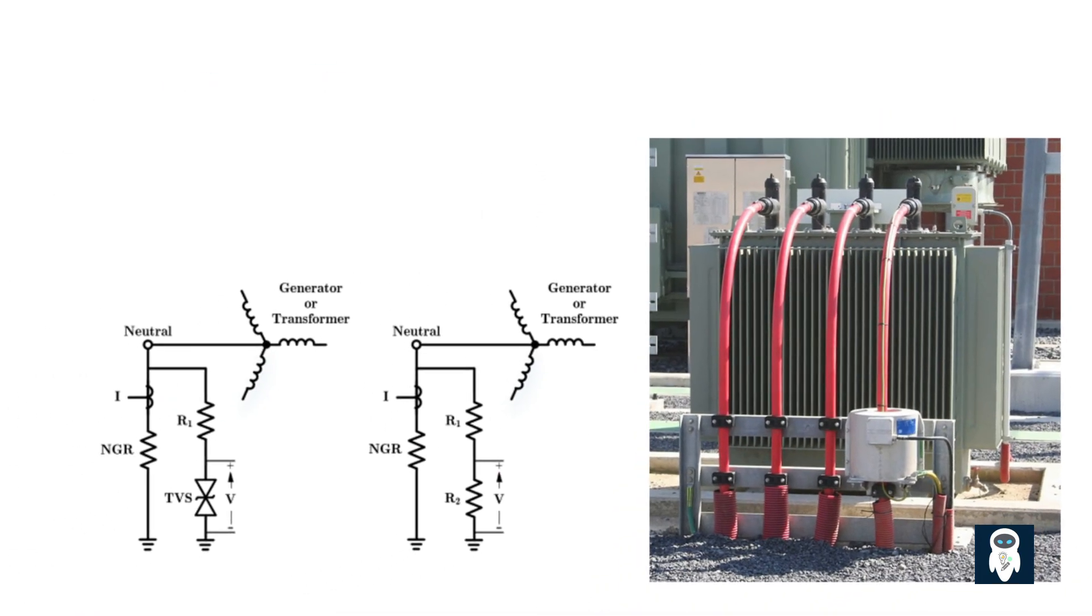Now, let's talk about the neutral grounding resistor. In simple terms, a neutral grounding resistor is a resistor that connects the neutral point of a transformer to the ground. It plays a significant role in ensuring the safe and reliable operation of the power system. So, what is the main reason for using a neutral grounding resistor?